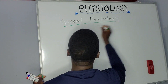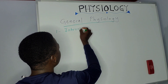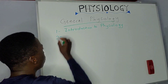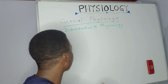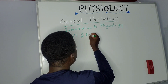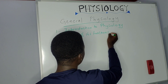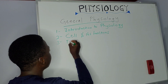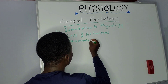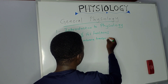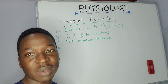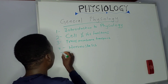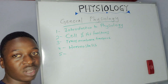Under general physiology, we are going to look at: one, the introduction to physiology; two, the cell and its functions; three, transmembrane transport; four, the concept of homeostasis; and finally, the body fluid compartments.